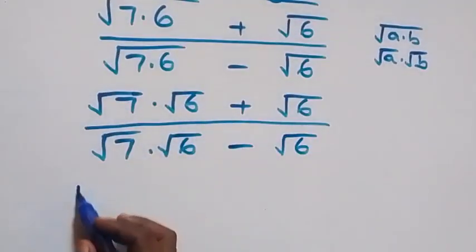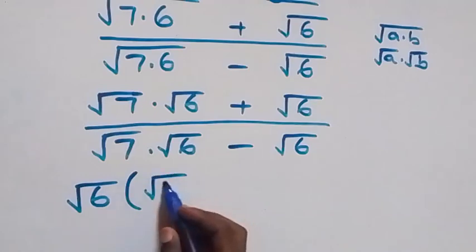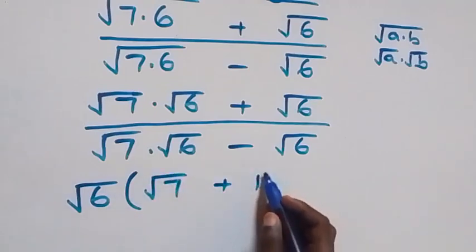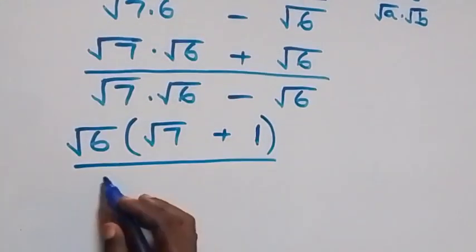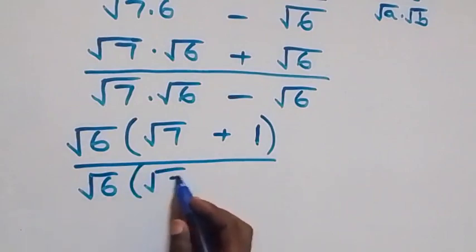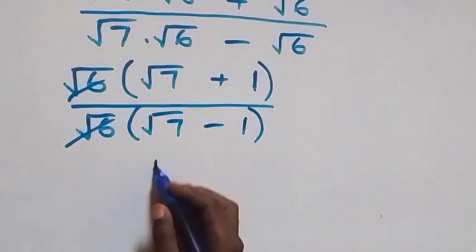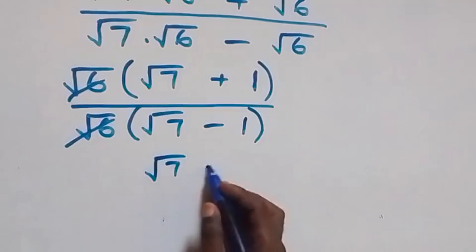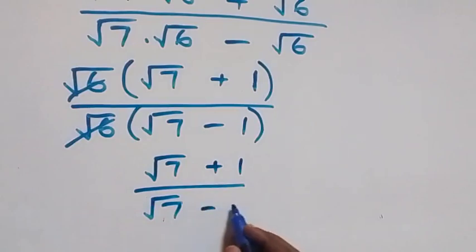Then here we have root 6 common, so we factor it out. This becomes root 6 into bracket (root 7 plus 1), divided by root 6 into bracket (root 7 minus 1). The root 6 cancels with each other, and this becomes (root 7 plus 1) over (root 7 minus 1).